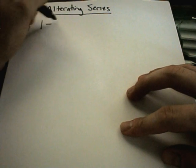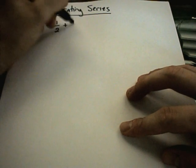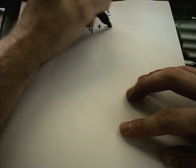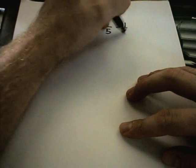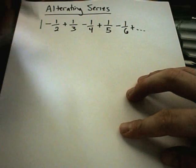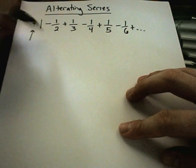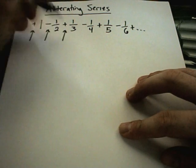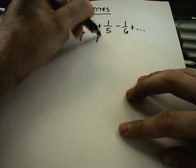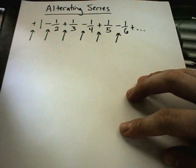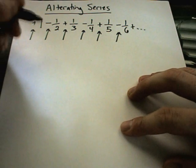could be 1 minus 1 half plus 1 third minus 1 fourth plus 1 fifth minus 1 sixth, etc. So notice the alternating refers to the signs. So this is an alternating series.